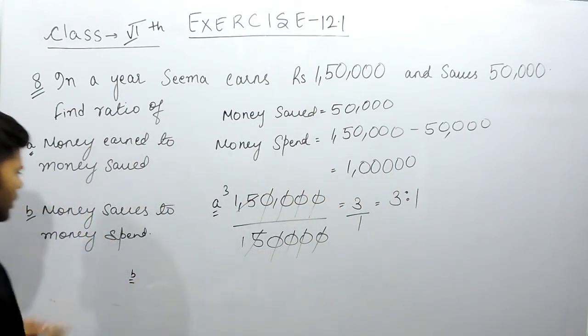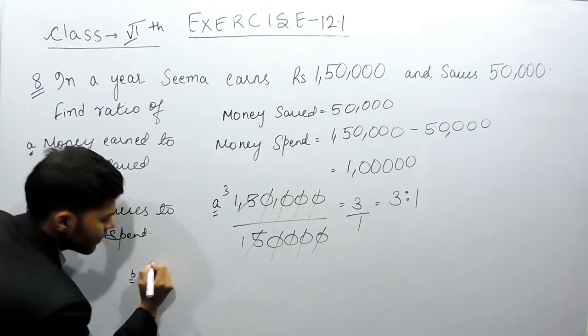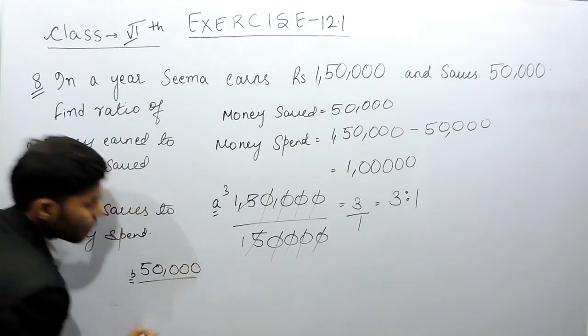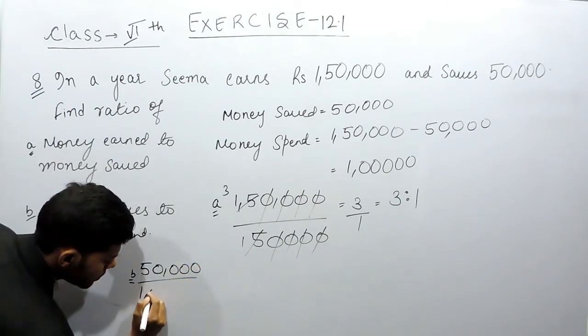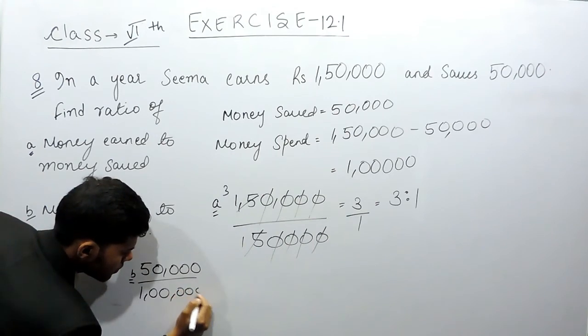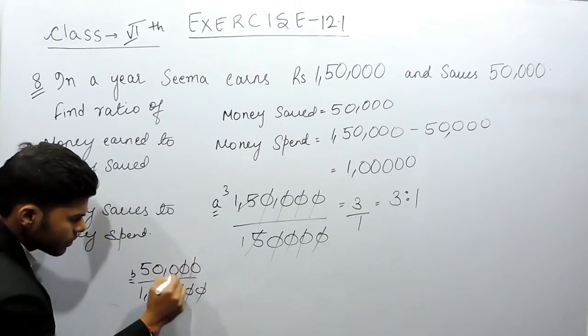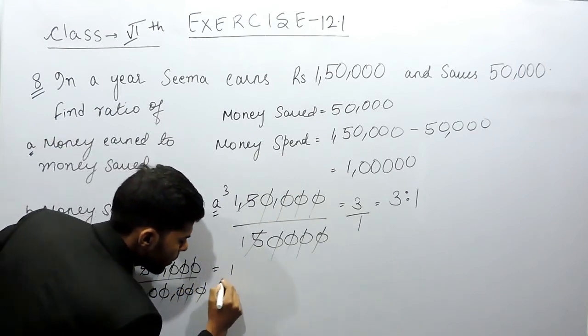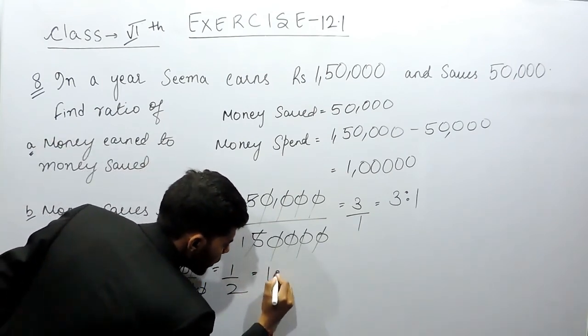And in part B, it is money saved to money spent. Now money saved is Rs 50,000, money spent is Rs 1,00,000. We cancel these. 5, 1 times, 5, 2 times, so this will come out to be 1 by 2 or 1 ratio 2.